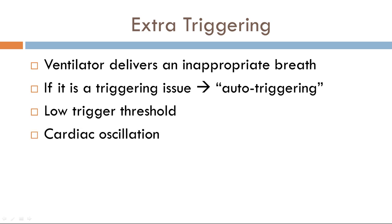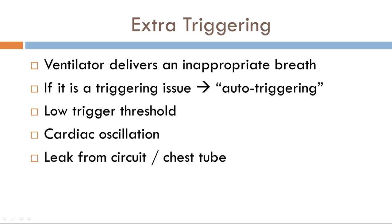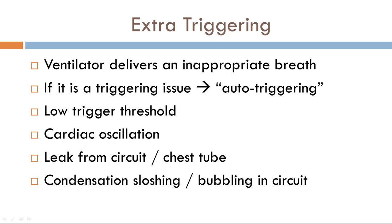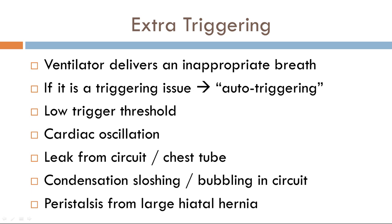Cardiac oscillations — high cardiac output and cardiac oscillations — can actually cause extra triggering. Leaks from the circuit or a chest tube in place can also cause extra triggering. Condensation in the tubing or bubbling in the circuit can cause a change in pressure or flow resulting in extra triggering. Even peristalsis can cause extra triggering. Long story short, extra triggering is due to extra-pulmonary causes.